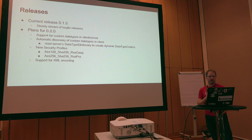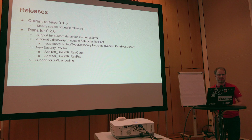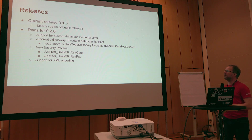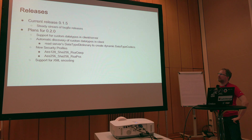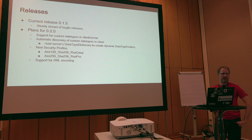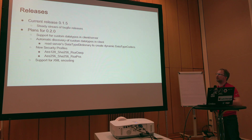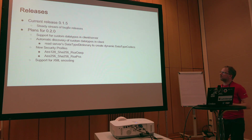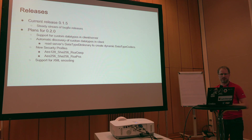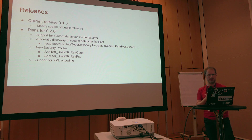Releases. Kevin updated the slide and made a new release in the meantime. The current release is 0.1, which was the first release ever at Eclipse. There is a steady stream of bug fixes, so currently it is 0.1.5. There are plans for going to 0.2, which continues the core functionality of OPC UA. There is progress — if you know OPC UA you will understand; otherwise it's a nice slide.